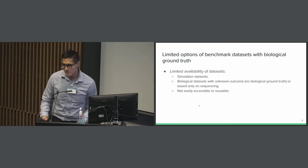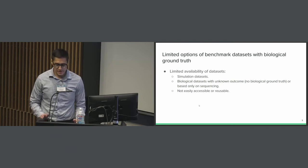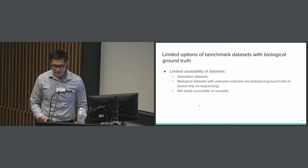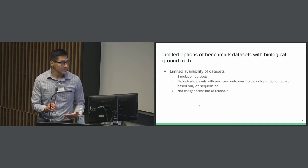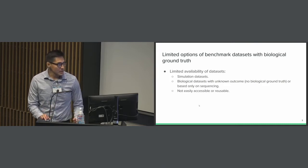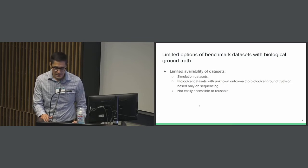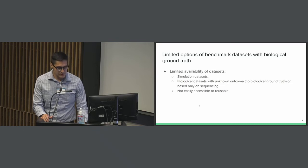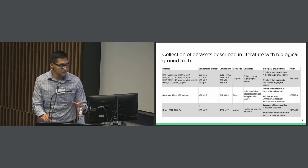Another limitation for the development of differential abundance methods is the limited options for benchmark datasets. Commonly, datasets used come from simulations, which often do not reflect the complexity of biological data. Some biological datasets are used, but many lack a biological ground truth, so researchers cannot really know if the results are correct. On the other hand, some datasets are not viable or reusable. To tackle this, we are creating a collection of datasets which have been described in literature, are viable, and we are standardizing these into a single resource.